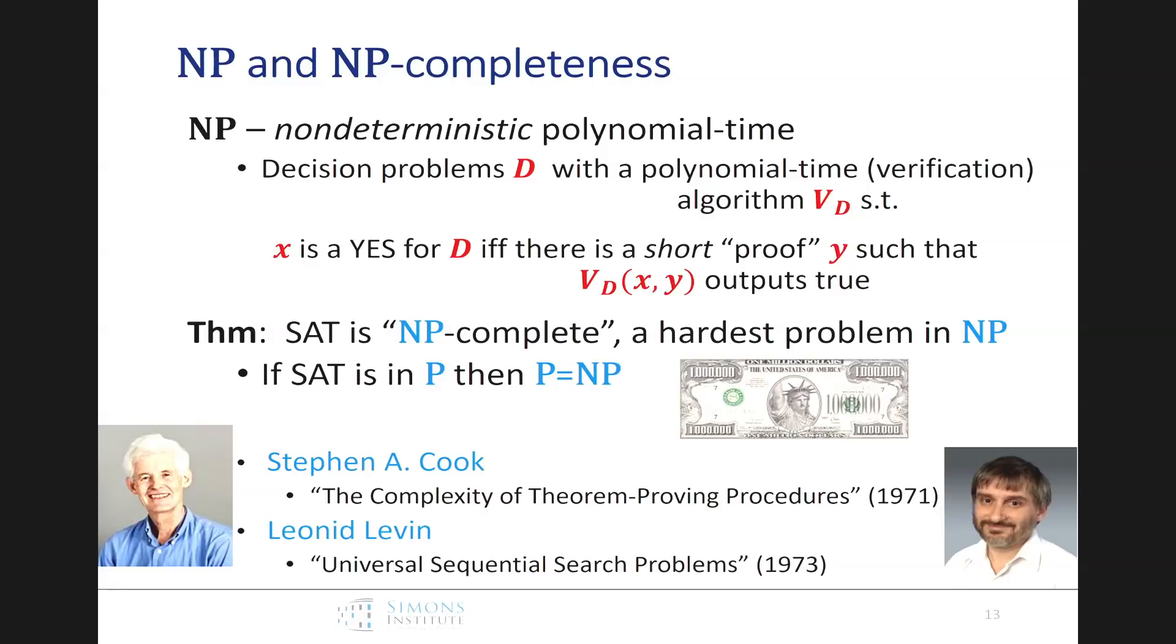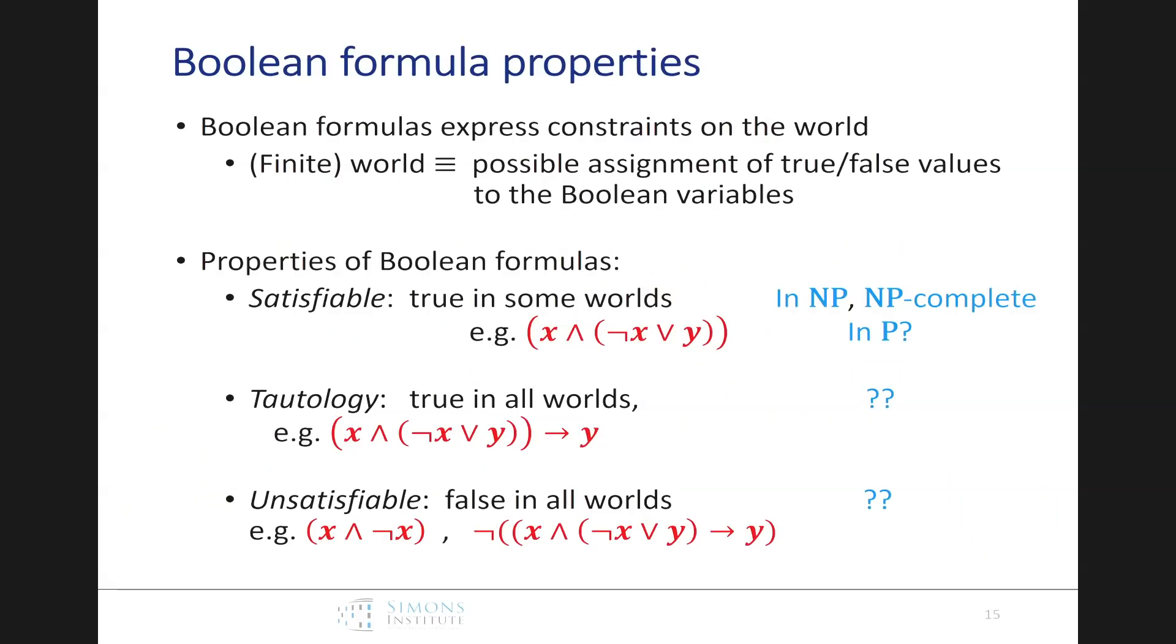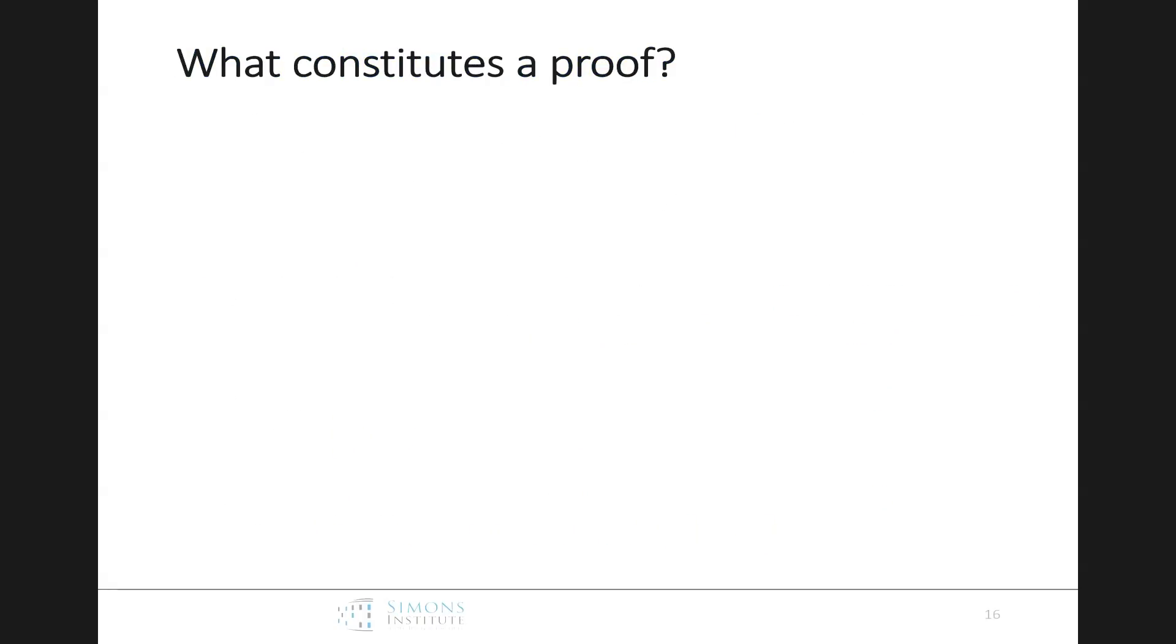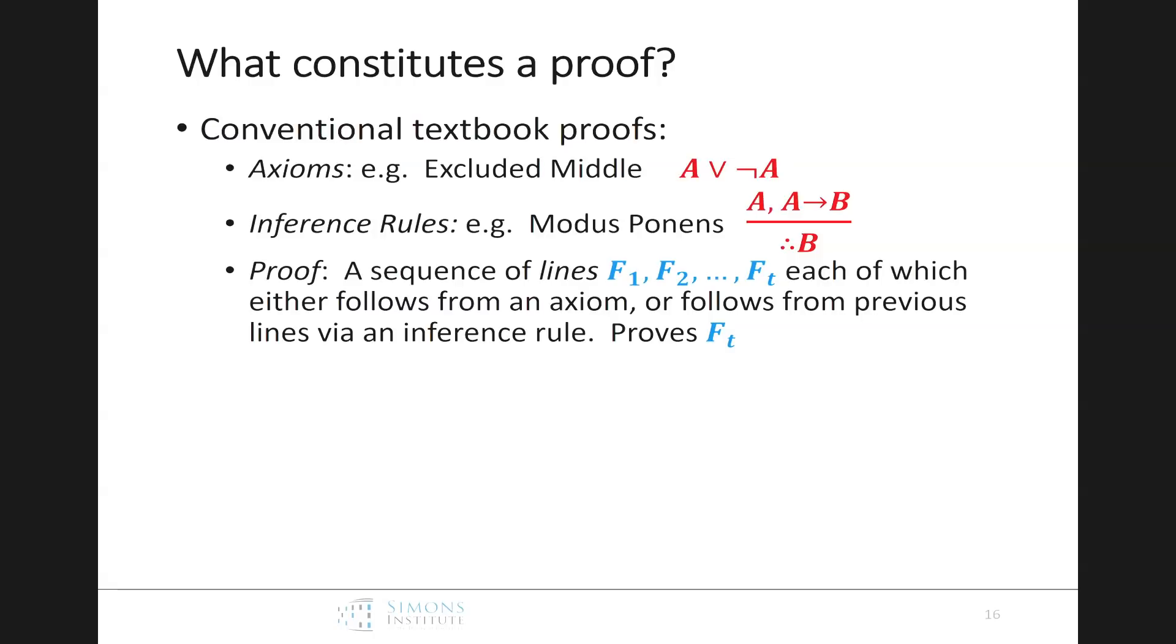Okay, so these are decision problems that have a polynomial time-associated verification algorithm, such that a string x is a yes for the decision problem, if and only if there's a short proof y, such that this verifier checks out and says y does prove that x is a yes for that problem. And by short, we mean polynomial. So, of course, SAT is NP-complete. That's the big result of both Cook and Levin on opposite sides of the Iron Curtain, which means that if SAT is NP, then P equals NP, and figure that out, and the Clay Institute will give you some bills of that form. So, million dollars. So, Boolean formulas, so these are the same problems we had before.